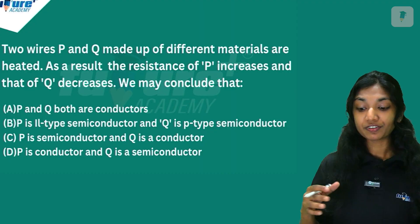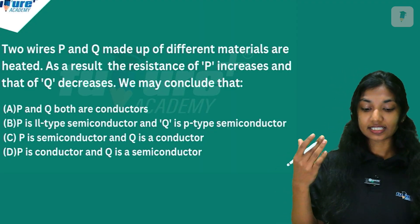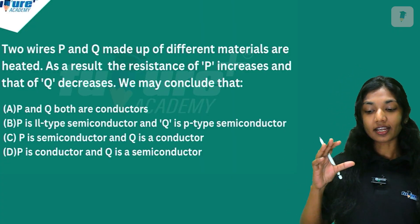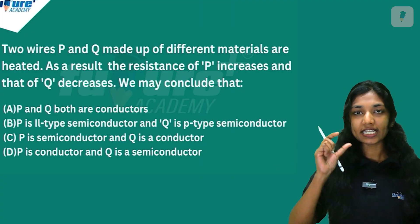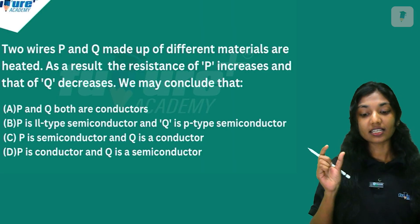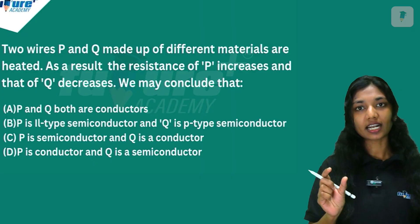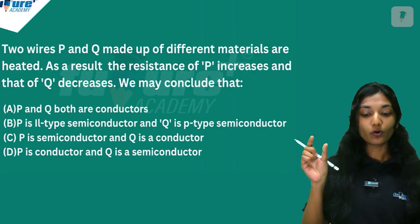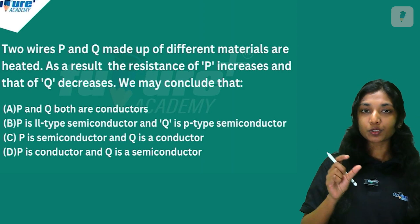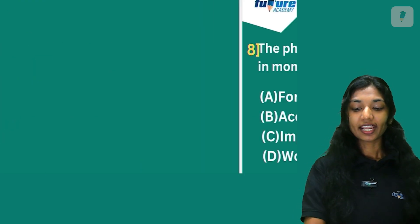Next question: Two wires P and Q are made of different materials and are heated. The resistance of P increases and Q decreases. What may be concluded? A conductor's resistance increases with heat, while a semiconductor's resistance decreases. So P is a conductor and Q is a semiconductor. The answer is Option D.